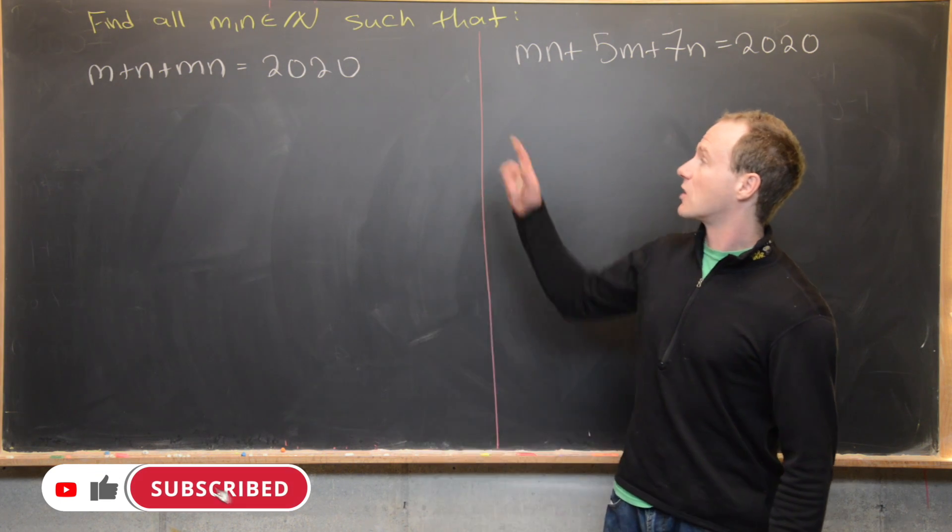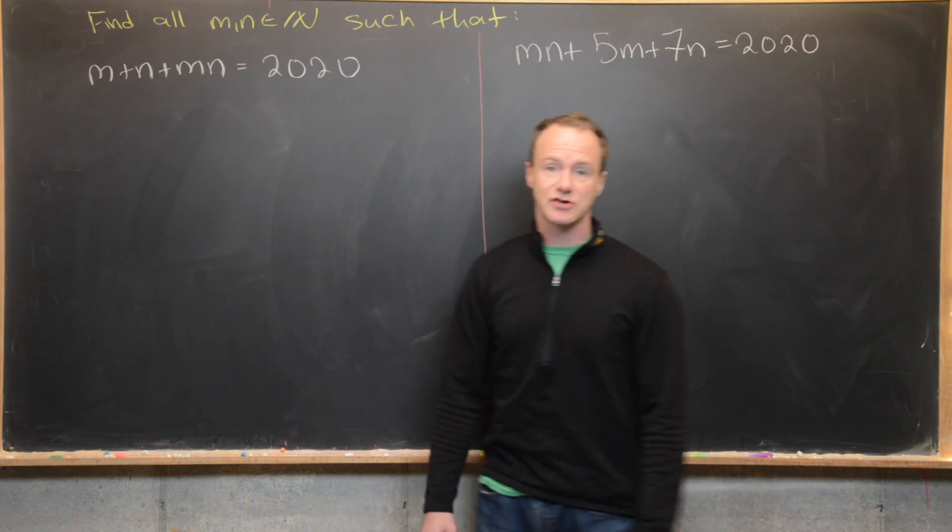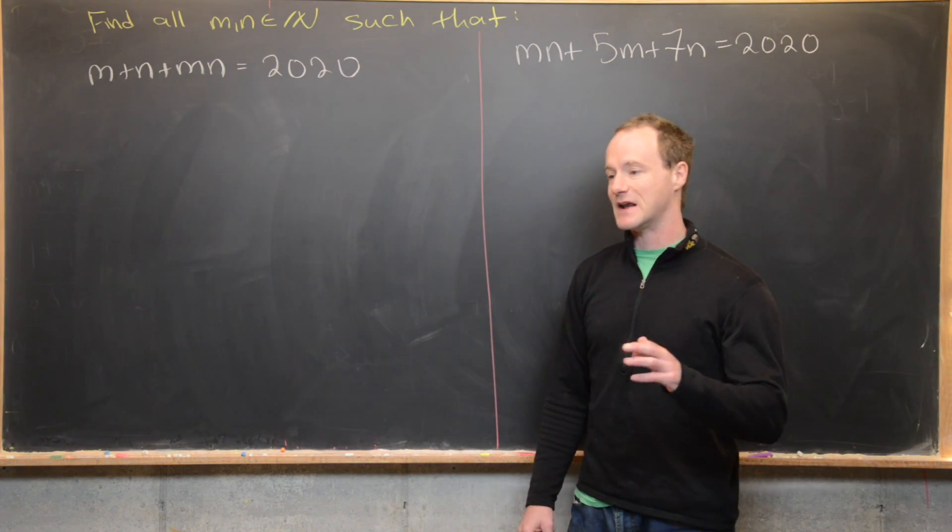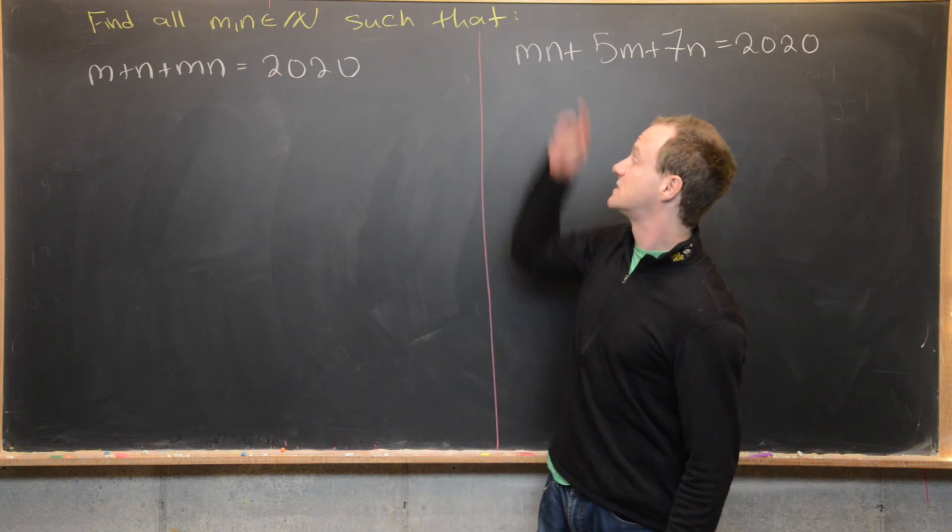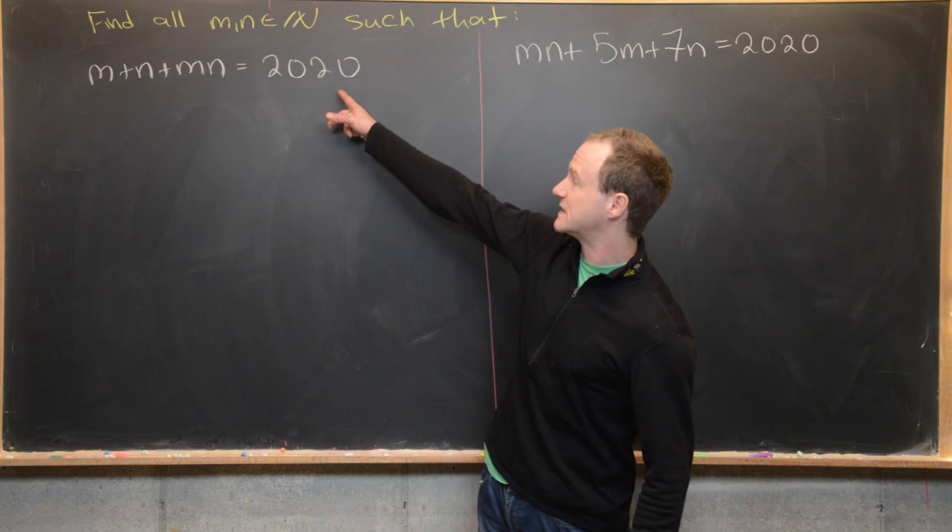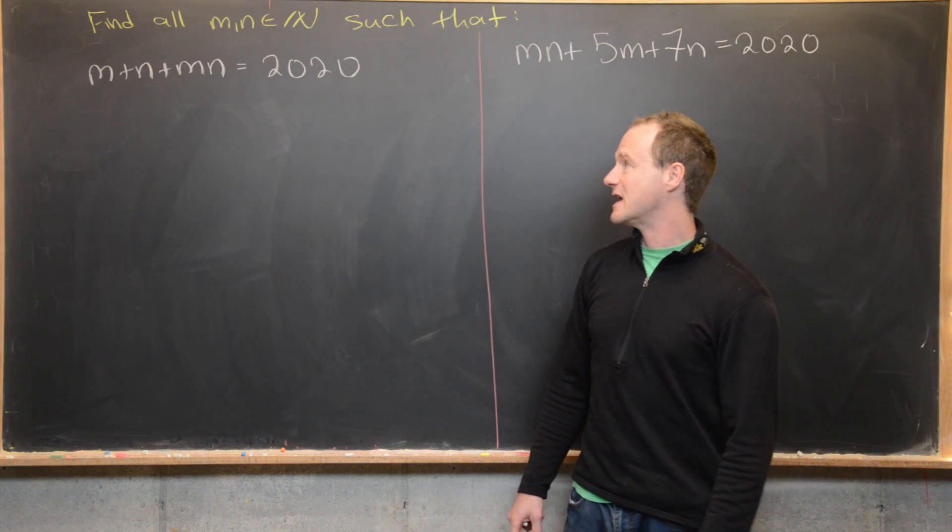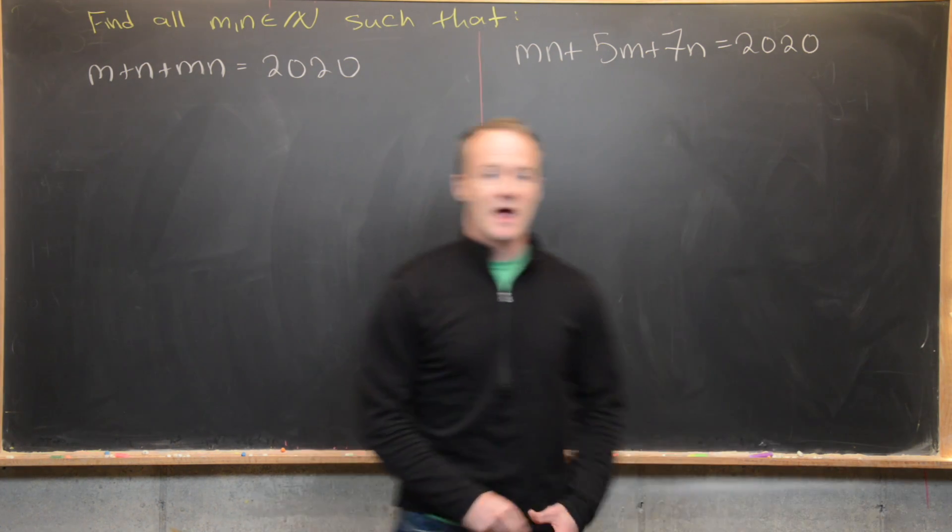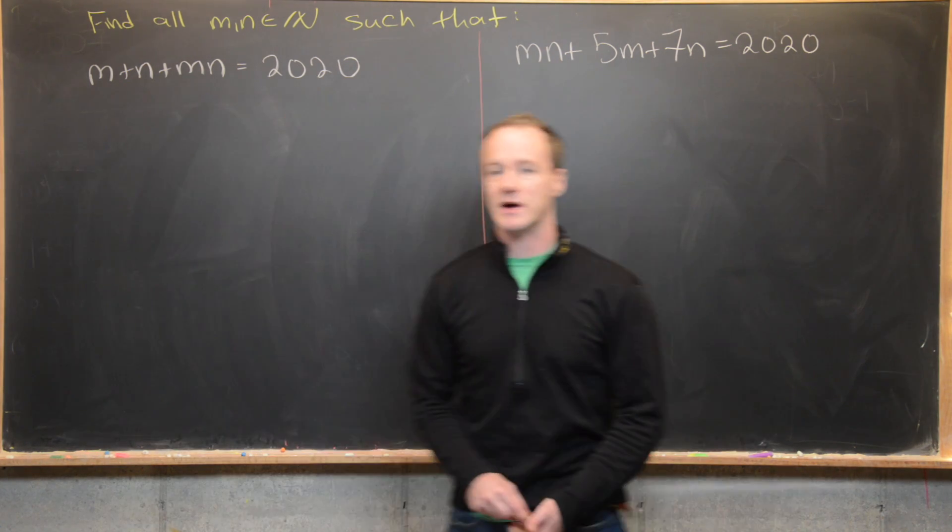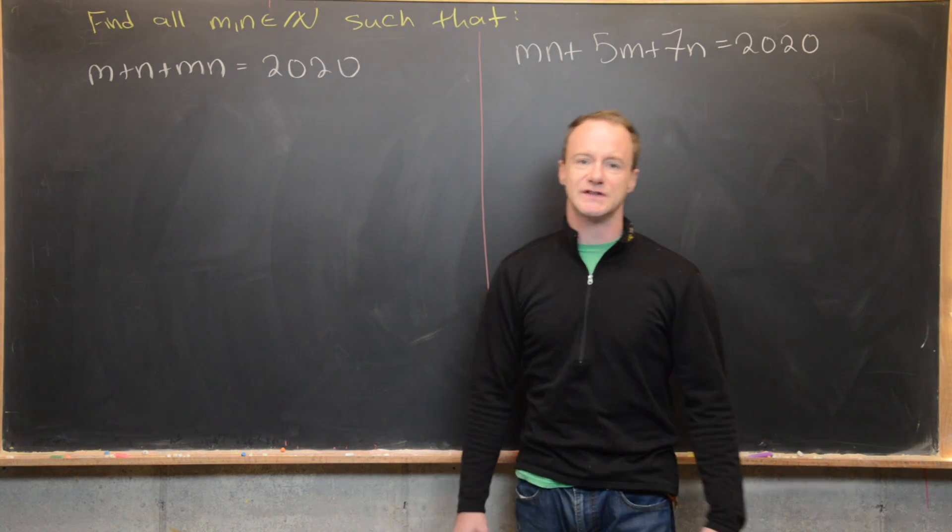So our goal is to find all natural numbers m and n, and by natural numbers I mean positive integers, such that first of all this equation is satisfied: m plus n plus mn equals 2020. And then we'll also do this second equation, but let's maybe get to this first one.